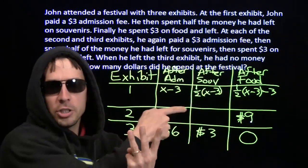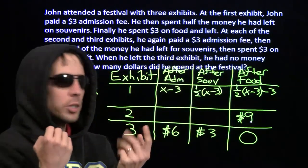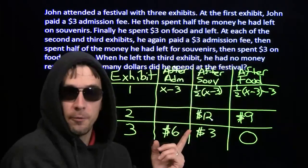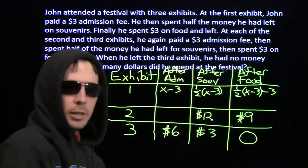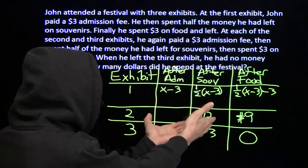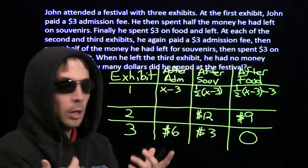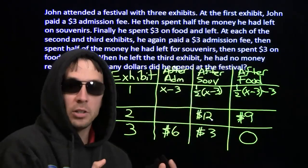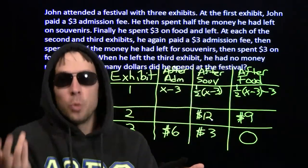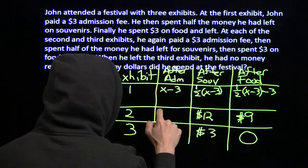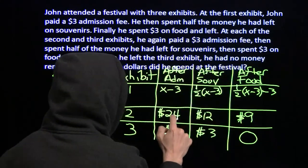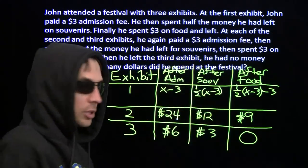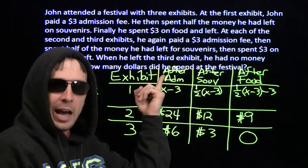He bought that food for three dollars in the second exhibit, so one more step backwards: he must have had twelve dollars before the food, spent his three dollars on food, and ended up with nine. So he had twelve dollars in exhibit two after blowing half his money on souvenirs. He spent half on souvenirs and had twelve left — that means he must have spent twelve on souvenirs, so he must have had twenty-four dollars right before buying those souvenirs. He spent half of that twenty-four and ended up with twelve. So he's got twenty-four after admissions.